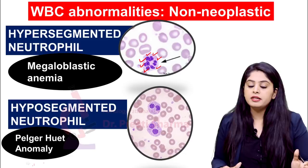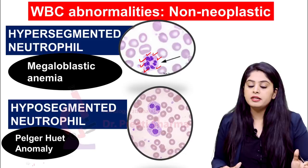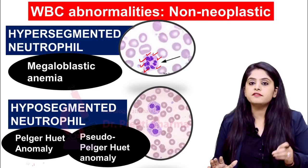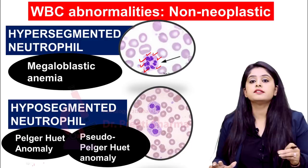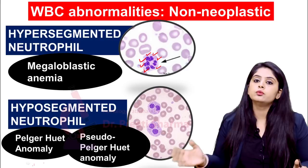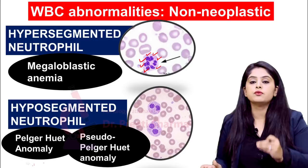There are two terms: Pelger-Huët anomaly and pseudo-Pelger-Huët anomaly. If the neutrophil hyposegmentation is because of an inherited genetic disorder in the patient — it is running in the family — you would call it Pelger-Huët. But if it is not running in the family, not inherited, not genetic, you will call it pseudo-Pelger-Huët anomaly. So just on the basis of whether a genetic element is involved or not, the word pseudo will be added.